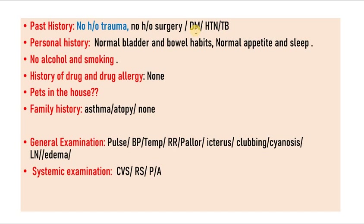Personal history is important. Patient's bladder and bowel habits, appetite and sleep are normal. Sometimes nasal obstruction may lead to problems with sleep and the patient may have occasional snoring. Smoking and alcohol both may lead to allergic rhinitis. The patient may be taking some drugs and may be allergic to some drugs, which has to be noted because allergic rhinitis may be associated with drug allergy. Sometimes there may be pets in the house like dogs and cats — furry animals — which may also lead to allergy. Family history of asthma and atopy is to be asked because atopy is a familial allergy and asthma may also have familial predisposition.